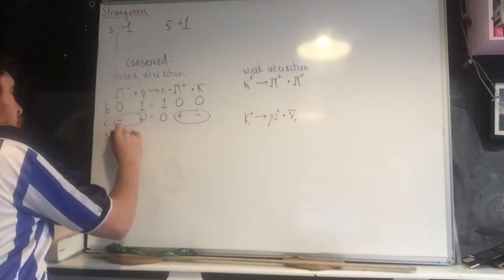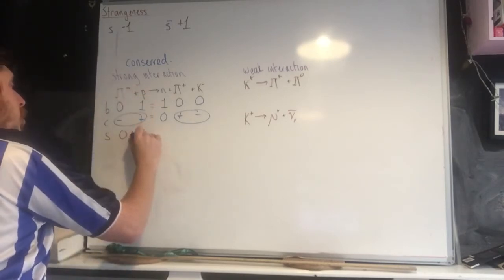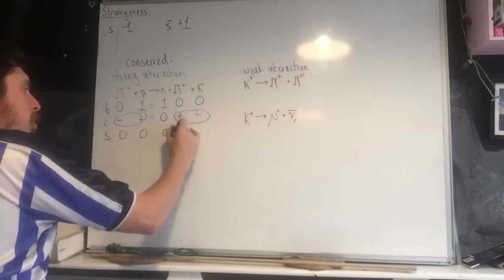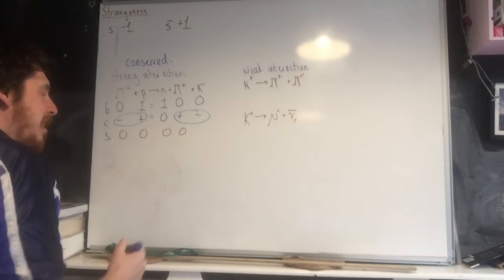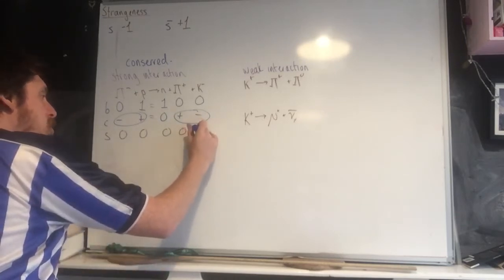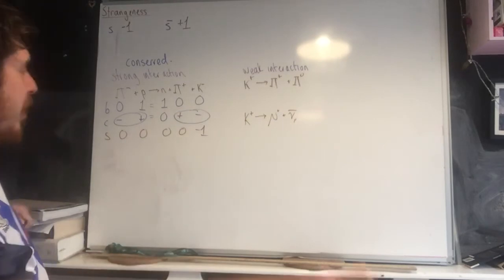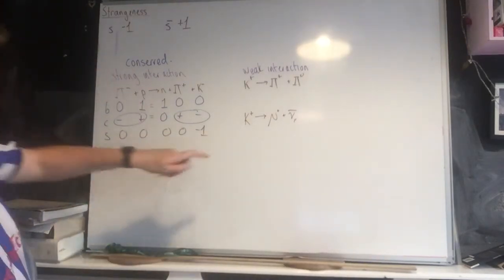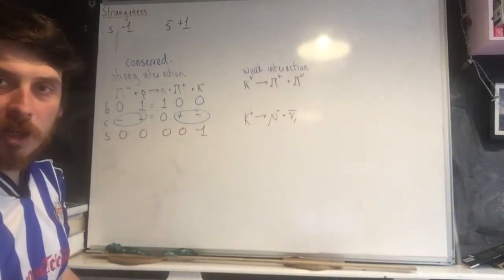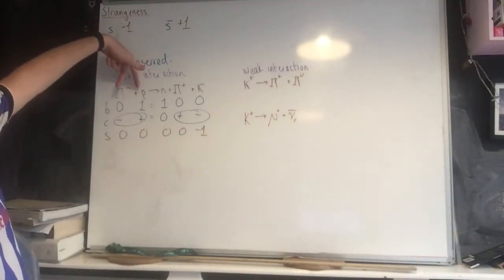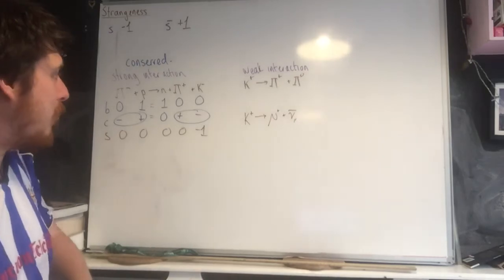A pion has no strangeness. A proton has no strangeness. A neutron has no strangeness. This also has no strangeness. And an antikaon has strangeness of minus one. So because of this, this reaction can't take place, because strangeness is not conserved. We know it's a strong interaction because it's a collision between two particles.